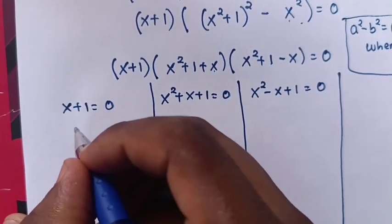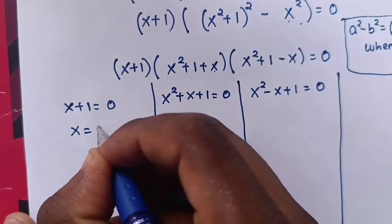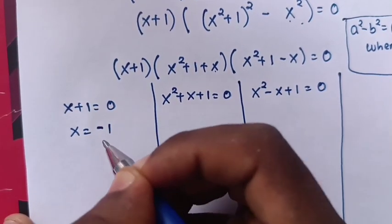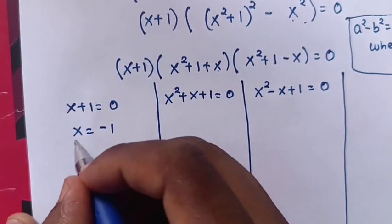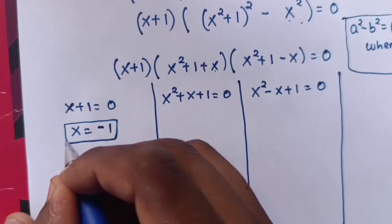From Case 1, x = −1. This is the first value of x.